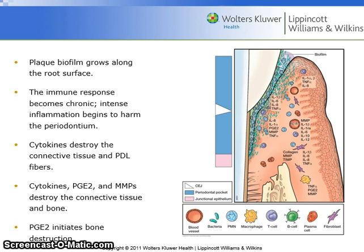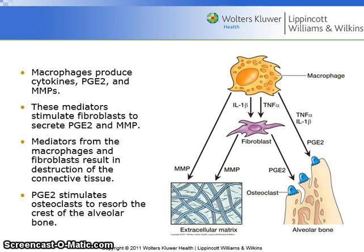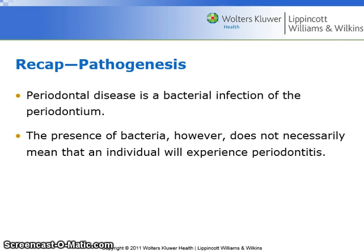PGE2 initiates bone destruction. Macrophages produce cytokines, PGE2, and MMPs. These mediators stimulate fibroblasts to secrete PGE2 and MMPs. Mediators from the macrophages and fibroblasts result in destruction of the connective tissue. PGE2 stimulates osteoclasts to resorb the crest of the alveolar bone.